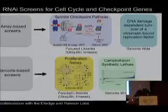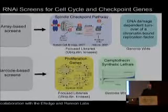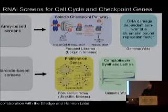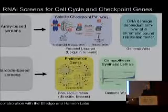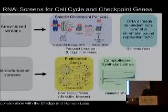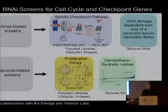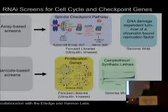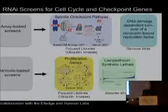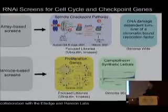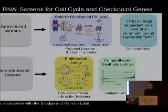The story actually starts several years ago with an attempt by my colleagues Steve Ellage and Greg Hannon and my lab to use RNAi approaches to interrogate cell cycle regulatory pathways and DNA damage control pathways in mammalian cells. RNAi has become a useful tool to identify genes involved in different pathways, and we've been utilizing two different types of platforms: array-based screens and barcode-based screens.